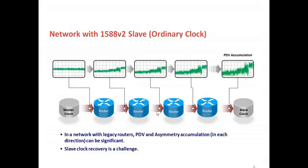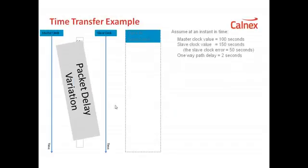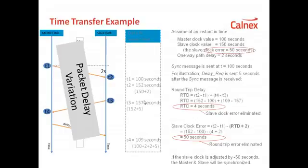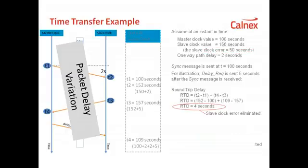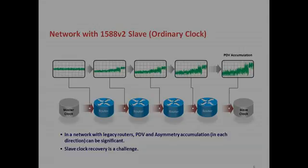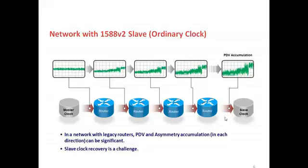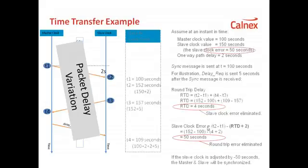Remember, the slave is working out the delay across the network and adjusting its time using that delay information. What happens when that delay keeps changing? When that delay keeps changing, that instantly becomes a problem to the slave. While it's doing all of its calculation, packet delay variation means that that delay isn't calculated just once — it has to constantly be calculated and the slave clock has to be corrected. In other words, packet delay variation is the main challenge that the slave clock faces in recovering accurate time. If we look at the previous slide, packet delay accumulated in the network means the slave clock has a challenge to recover accurate time when there's significant delay, packet delay variation, and asymmetry in the network.